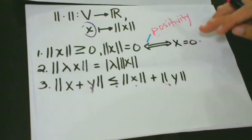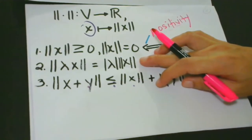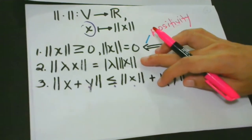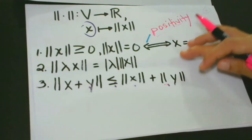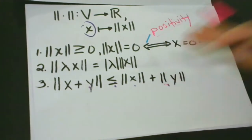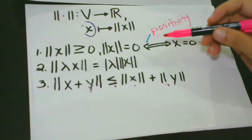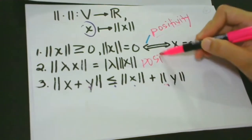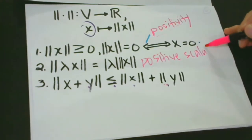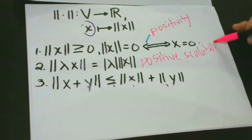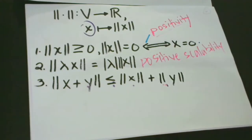Number two: if you consider norm as a length, you can see why it can't be negative because length always has a positive space. The length of a scalar product of a vector is the length of the vector multiplied by the absolute value of the scalar. This property is called positive scalability — it means that we increase the value of a certain vector by multiplying it by a scalar, and the value of this scalar must always be an absolute value, which is always positive.